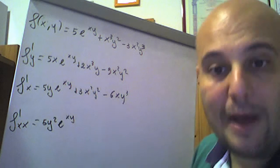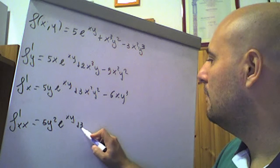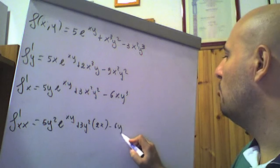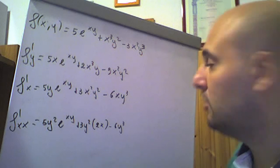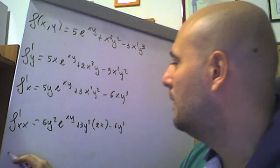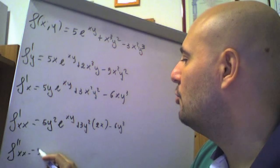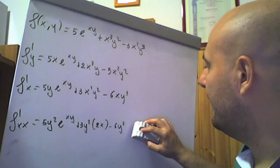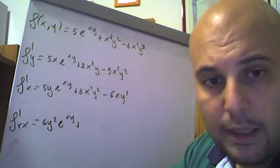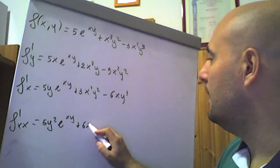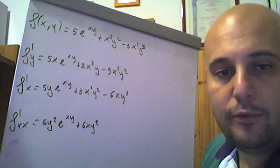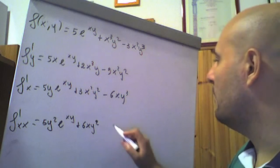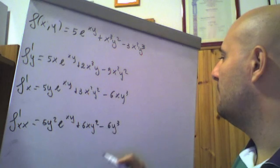Derivata di 3x²y²: 3y² sta fuori, deriviamo x quadro a cui la derivata è 2x, quindi 6xy². Meno 6y³ sta fuori, per x la derivata è 1, quindi meno 6y³. La derivata parziale seconda f_{xx} è dunque 5y²·e^(xy) più 6xy² meno 6y³.